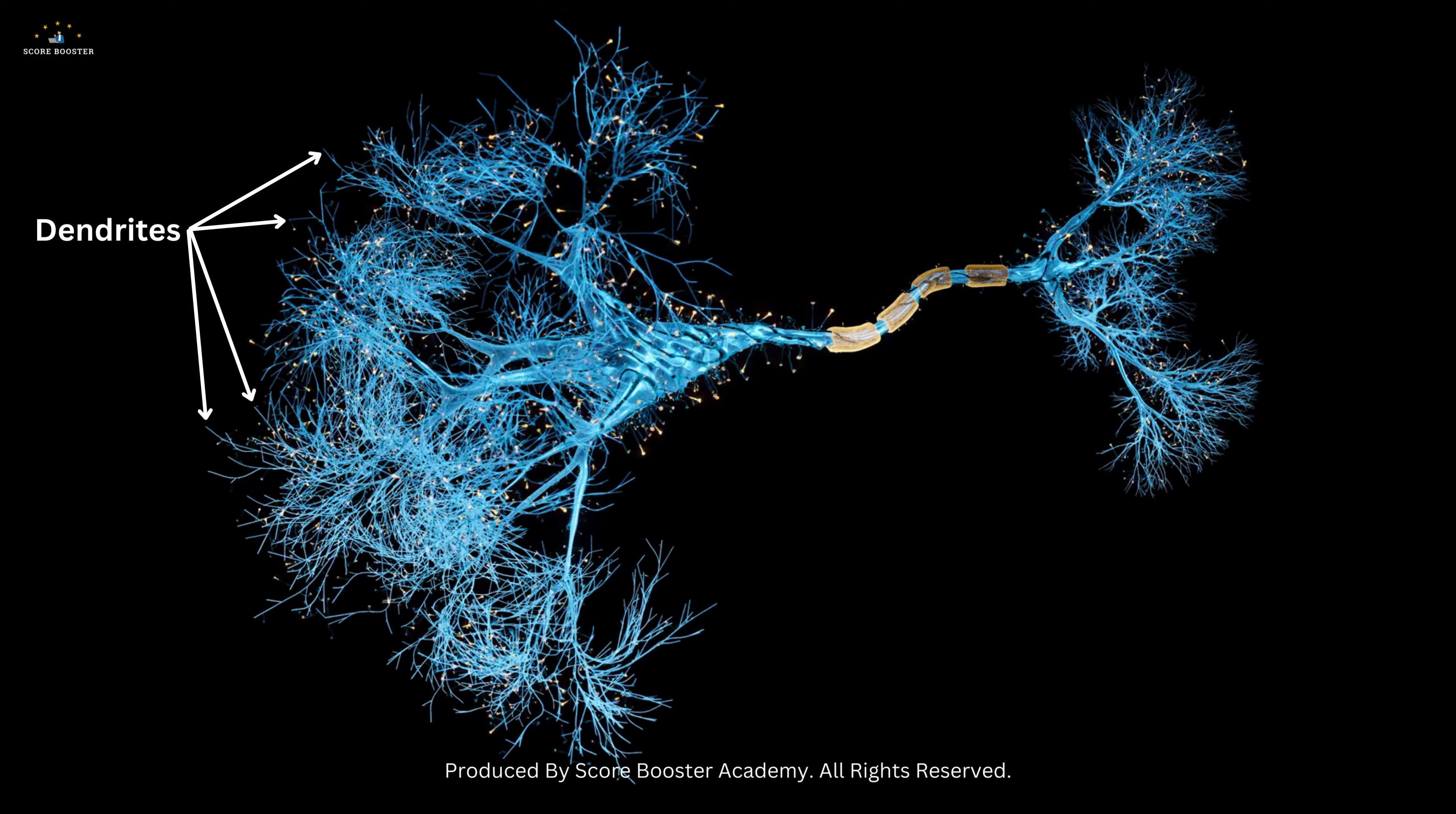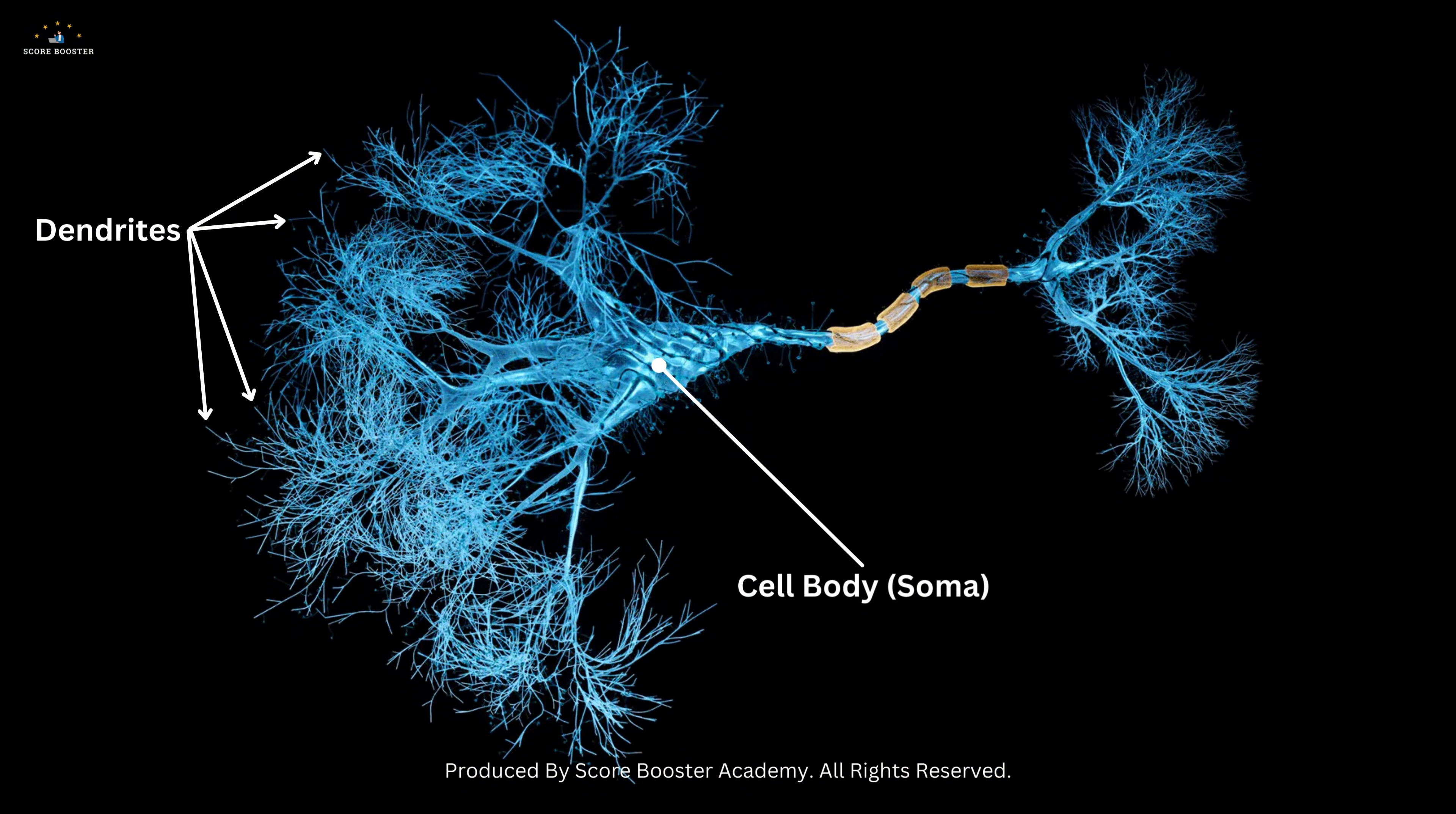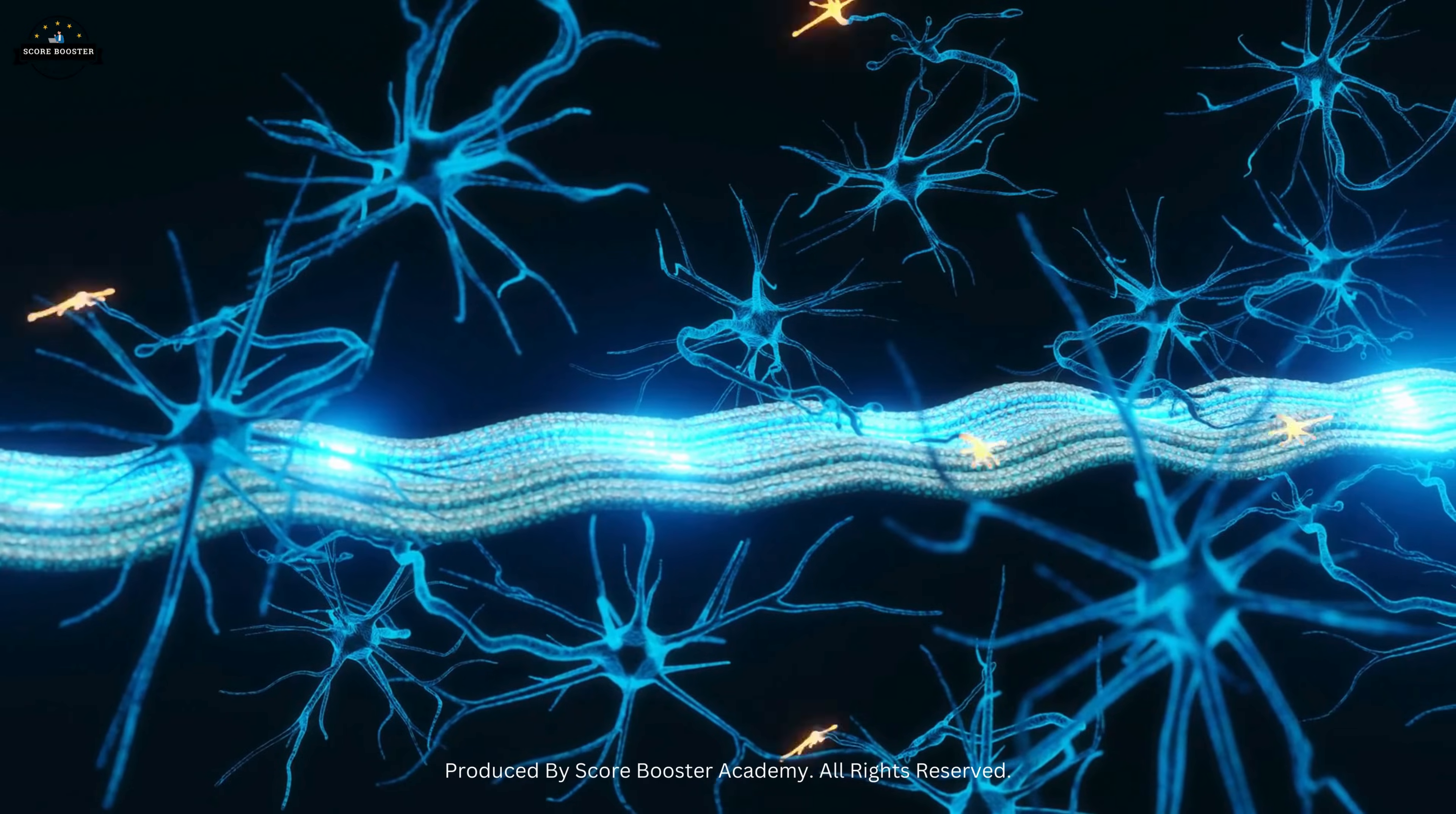The dendrites receive signals from other neurons and conduct them to the cell body. From there, the axon carries the signal away to other neurons or muscles.